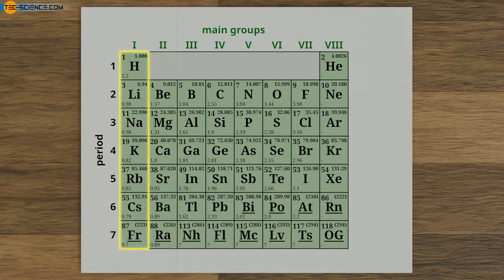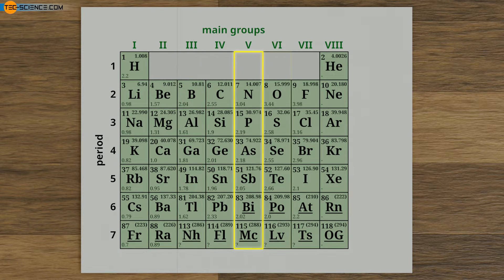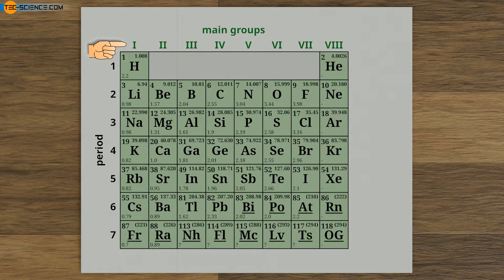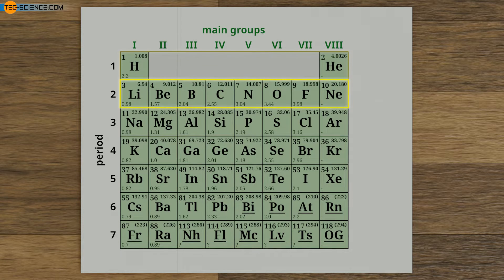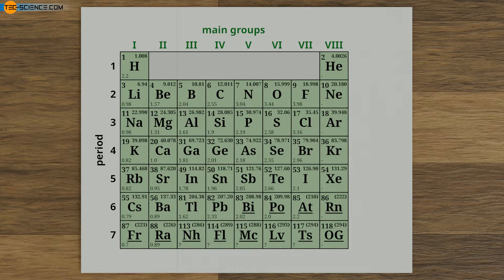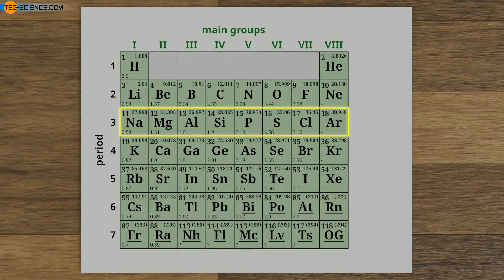The main groups, summarized in columns, are indicated by Roman numerals. In addition to this vertical division, the periodic table is also divided horizontally into so-called periods, which we will discuss in more detail later in this video. Within a period, the number of protons always increases by 1 from left to right, thus determining a new element.